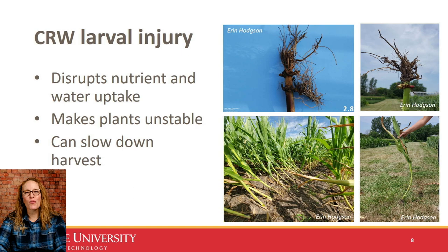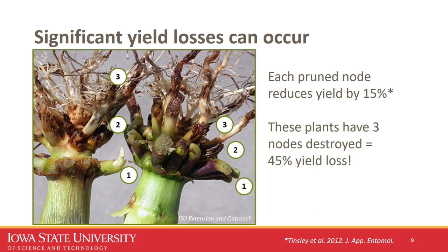If the plant survives and is goosenecked, it makes harvest a real challenge because combines have to go very slow to pick up the ears. Looking more closely at root injury: a huge meta-analysis conducted by Nick Tinsley in Illinois identified that for every node of roots pruned back to your first knuckle, there is approximately 15% yield loss. There are three major nodes that contribute to nutrient and water uptake, so three nodes destroyed equals approximately 45% yield loss. Any additional biotic or abiotic stress — moisture stress, pathogens, or other insect pests — can compound on top of the larval injury.